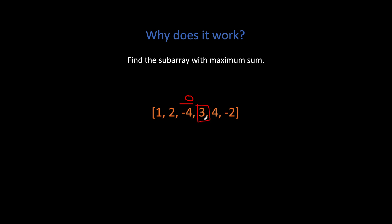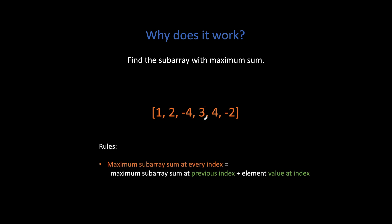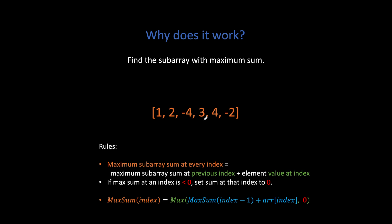We successfully reduced the problem of finding the maximum possible sum at an index to the maximum possible sum at the previous index plus the value of the current array element. The rules: the maximum subarray sum at every index equals the maximum subarray sum at the previous index plus the element value at the current index. If the maximum sum at any index is less than zero, we set the sum at that index to zero. The maximum sum function at index i equals the maximum of (max_sum[i-1] + value[i]) or zero, whichever is greater.